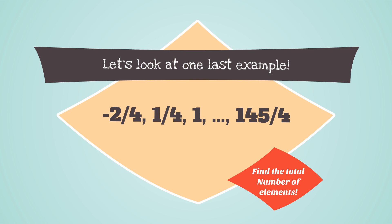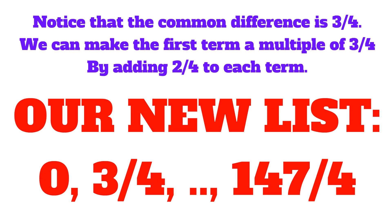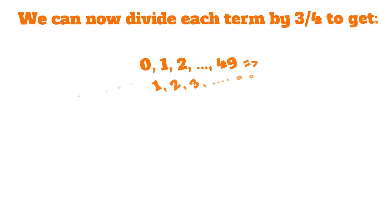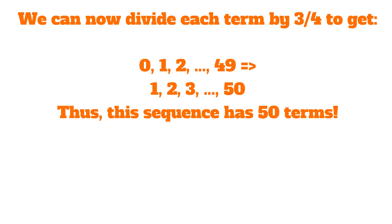Let's look at one last example. Find the number of total elements in this list. Notice that the common difference is 3 fourths. We can make the first term a multiple of 3 fourths by adding 2 fourths to each term. Our new list is 0, 3 fourths, all the way to 147 divided by 4. We can now divide each term by 3 fourths to get the new sequence 0, 1, 2, all the way to 49. Adding 1 to each term, we get 1, 2, 3, all the way to 50. And we already know that this sequence has exactly 50 terms.